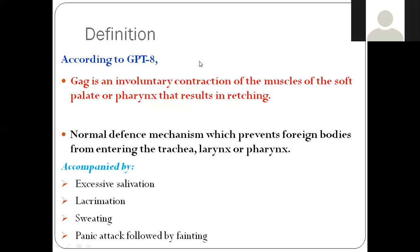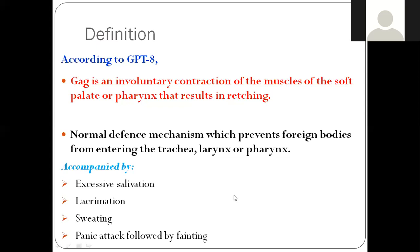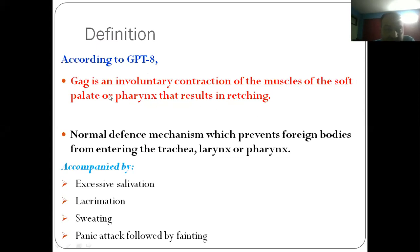According to the definition, gag reflex is an involuntary contraction of the muscles of the soft palate or pharynx that results in retching. It is involuntary — that means it is not in the control of the patient. It is a simultaneous contraction of the muscles of the soft palate as well as muscles of the pharynx, without permission and without desire of the patient.